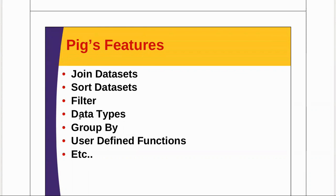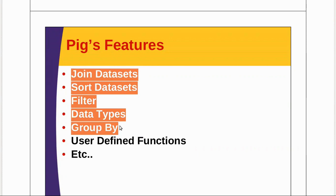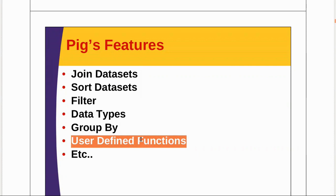If any function or feature is not offered by PIG for your requirement, you can create one using user-defined functions (UDFs). This is a very important feature of PIG — in SQL, if some functionality is not available you can't do anything, but in PIG you have the facility of writing UDFs to create the functionality yourself. That's why UDFs are first-class citizens here.